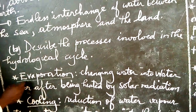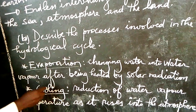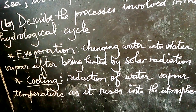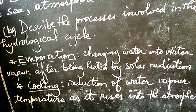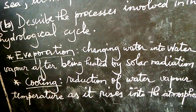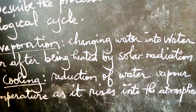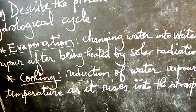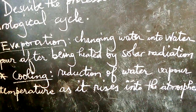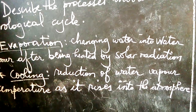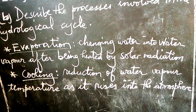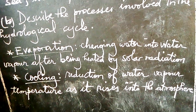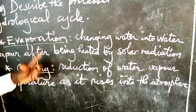This is process number one. Process number two is cooling. When we talk of cooling, this is a reduction of water vapor temperature as it rises into the atmosphere. Meaning that as the water vapor rises to the atmosphere, the temperature decreases. Whenever this water vapor moves up, it is approaching lower temperatures, and as a result it will start cooling. Such a process is referred to as cooling.